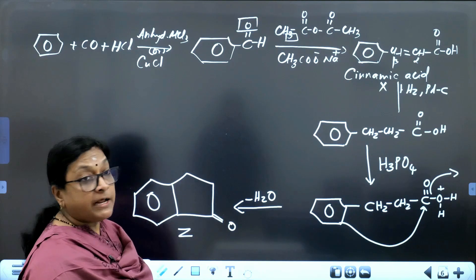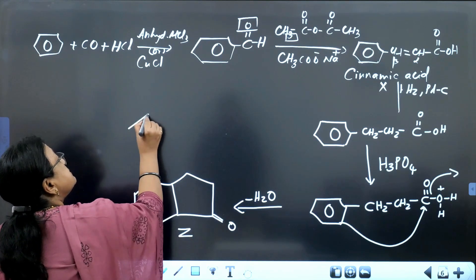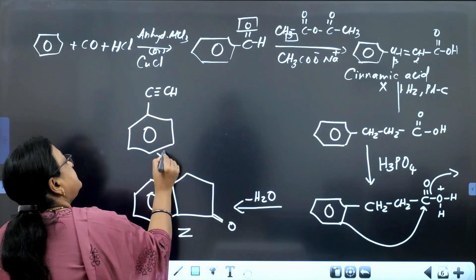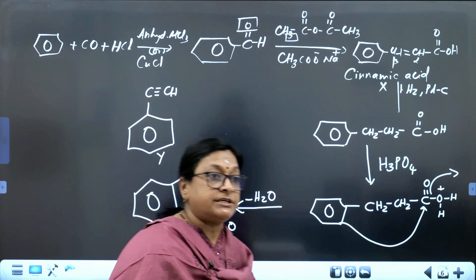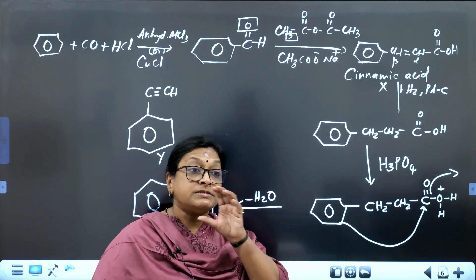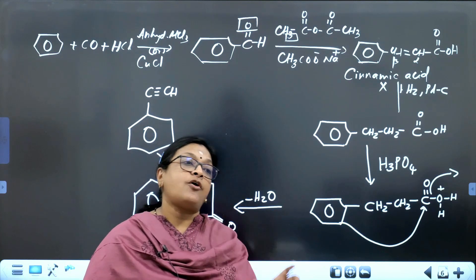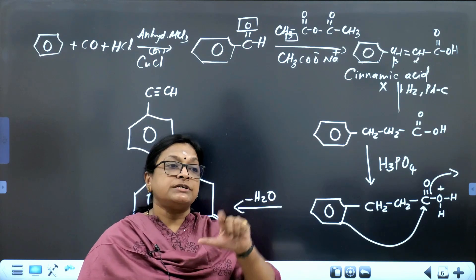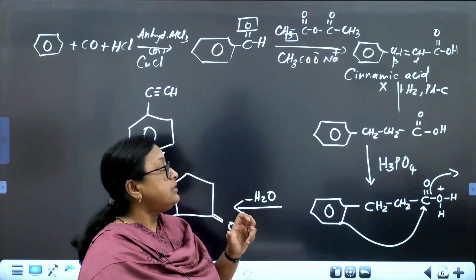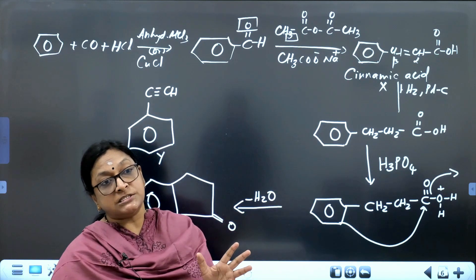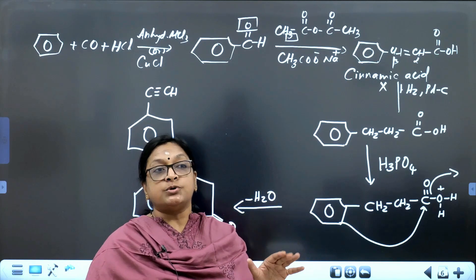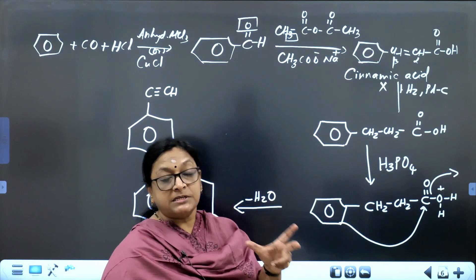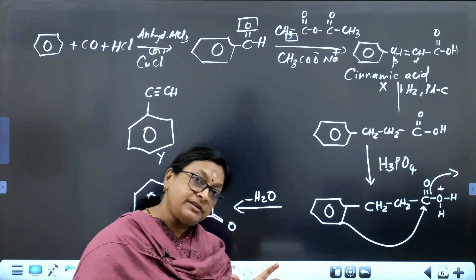So we have arrived at both Y and Z: Y is phenyl–C≡CH (phenylacetylene) and Z is the bicyclic ketone (1-indanone). These were two questions from 2018. The same Perkin's reaction concept appeared in many previous papers — for example, in 2012, two questions came on Perkin's reaction. All the reactions discussed — Gattermann-Koch, Perkin's, beta-elimination, and intramolecular EAS cyclization — are very important. In another session, I shall cover the 2012 question where Perkin's reaction appeared again. Thank you very much.